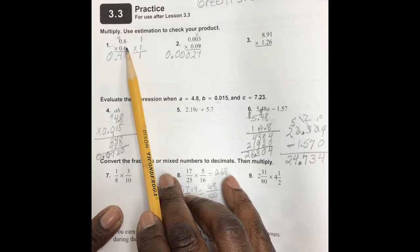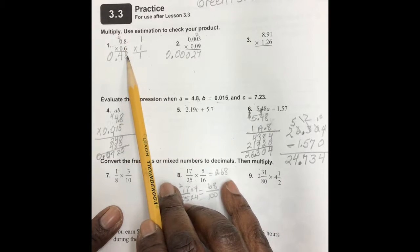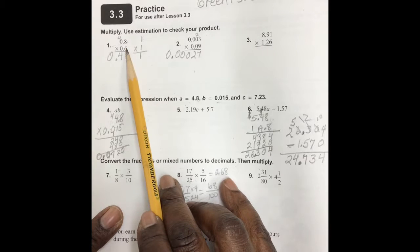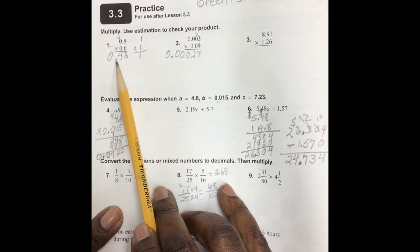So therefore two numbers must follow the decimal point in our product, and that will be our answer. When we estimate, our estimation was if this is round to the whole place will be one, this will be one, one times one is one.